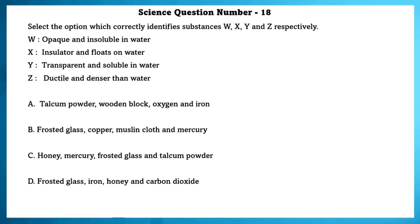Science question number 18. Select the option which correctly identifies substances W, X, Y and Z respectively. First, we will take W. W can be talcum powder, frosted glass or honey. Only talcum powder is opaque and insoluble in water. So, we can take option A. Insulator and floats on water: wooden block. Transparent and soluble in water: oxygen. Ductile and denser than water: iron.